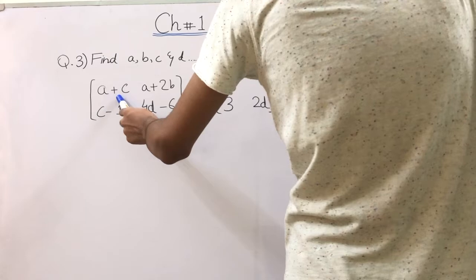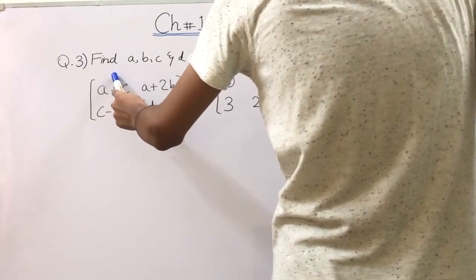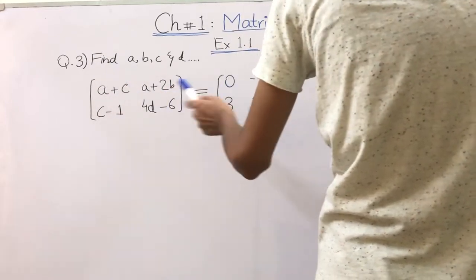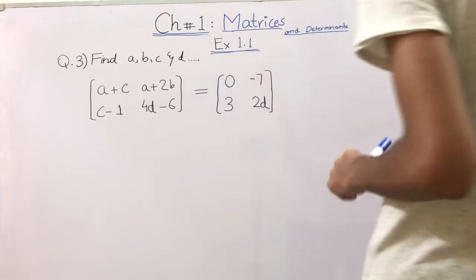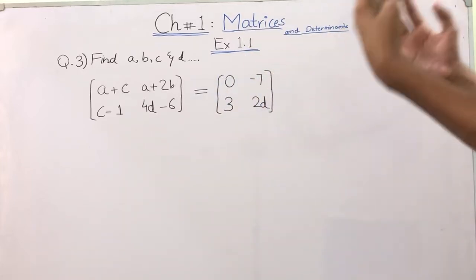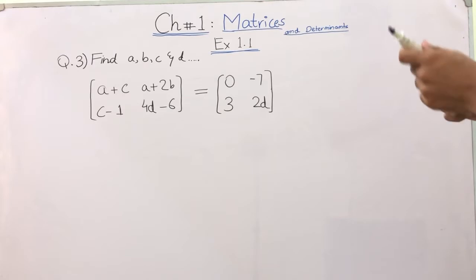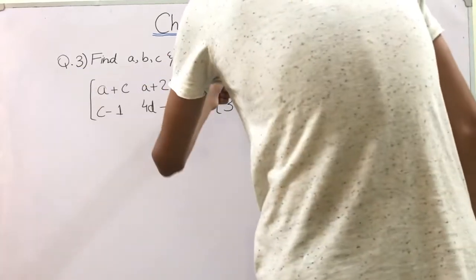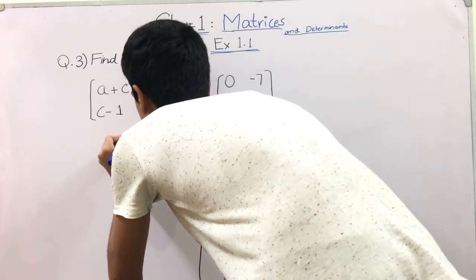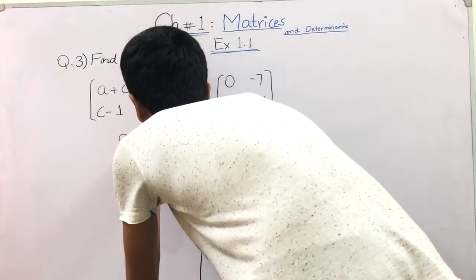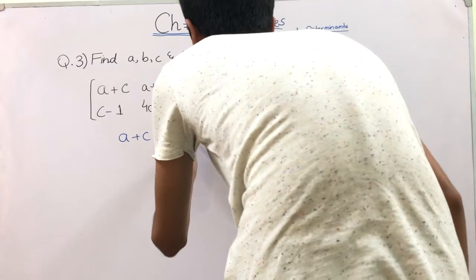For example, A plus C, this is top left. So 0 is top left. Then A plus C is equal to 0. This will become an equation. Now we will take these equations, then we will solve this question. The top left is A plus C is equal to 0. This is one equation.